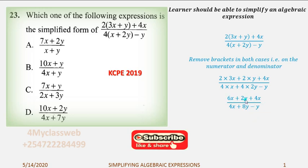Now, if you look at the numerator part, we've got 6x, we've got 4x. This is what we call like terms. Below, you've got 8y and minus y. So, if I put now my like terms together, I will have 6x plus 4x, that will give me 10x plus 2y. The denominator part will give me 4x plus 8y minus y will give me 7y.